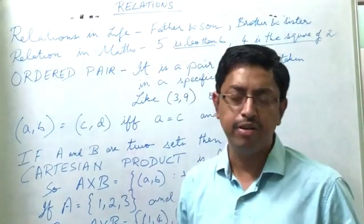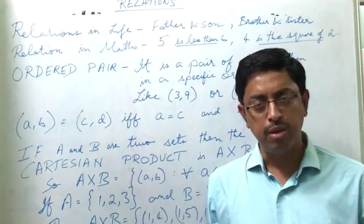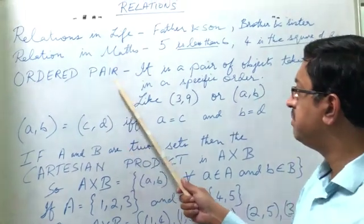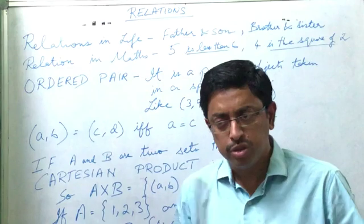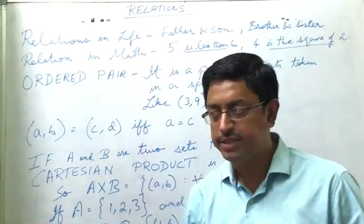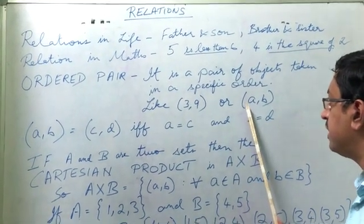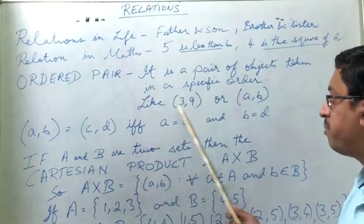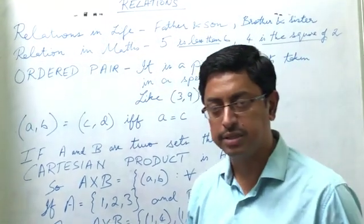We have these kind of relations in mathematics but they come from what is called ordered pairs. Now ordered pairs is basically a pair of objects taken in a specific order. So it is shown like this: a comma b in bracket. So you have, you put numbers, it is 3 comma 9 which is inside the bracket.